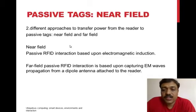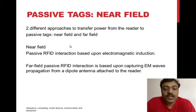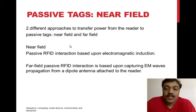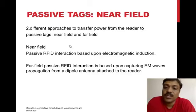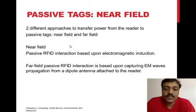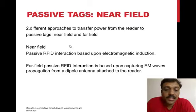In near field, the RFID reader passes a large alternating current through its electromagnetic coil, which is basically an antenna, resulting in an alternating magnetic field in its locality. If a tag that incorporates a smaller coil is placed in this field, an alternating voltage appears across the tag, enabling the tag to take power from the system.